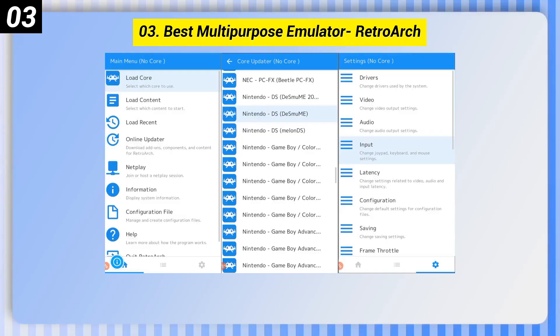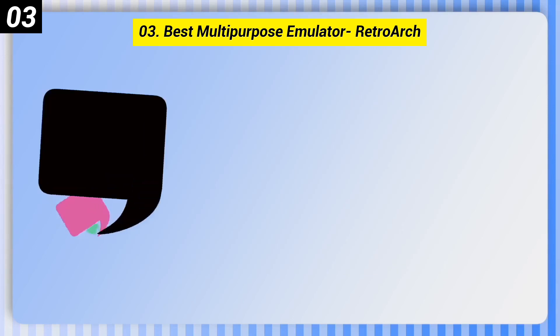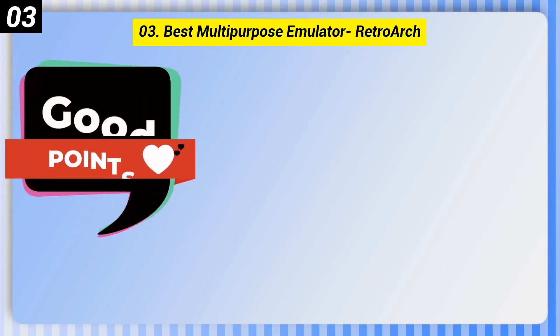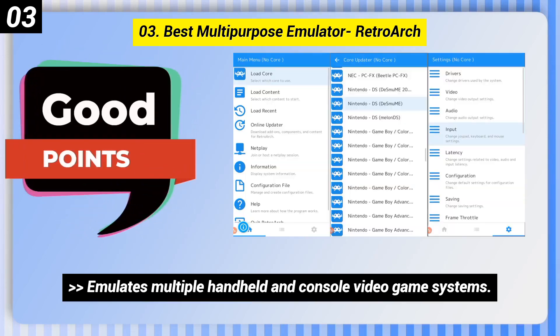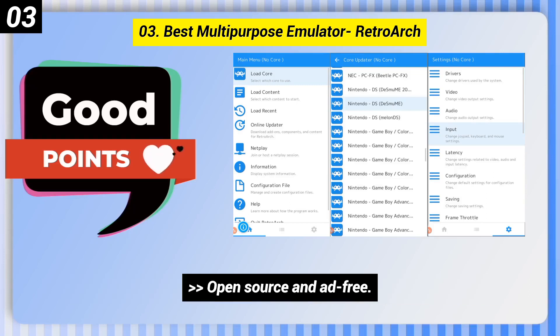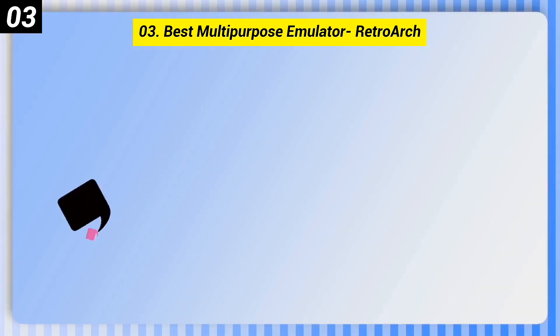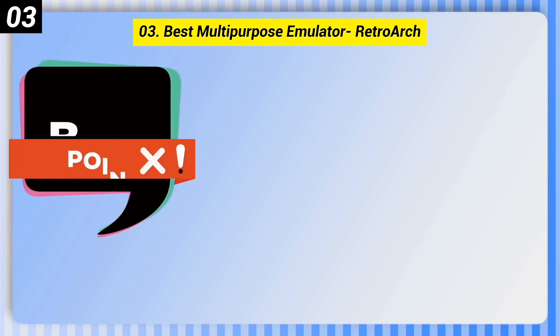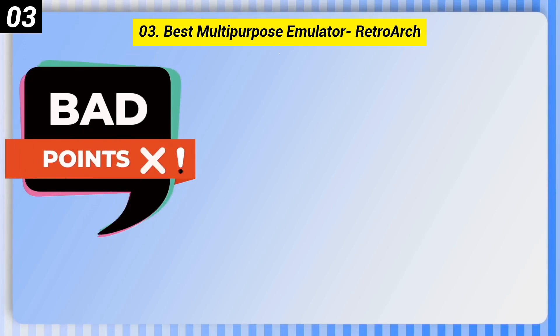Number 3: Best Multipurpose Emulator — RetroArch. Some good points: it emulates multiple handheld and console video game systems, and it is open source and ad-free.